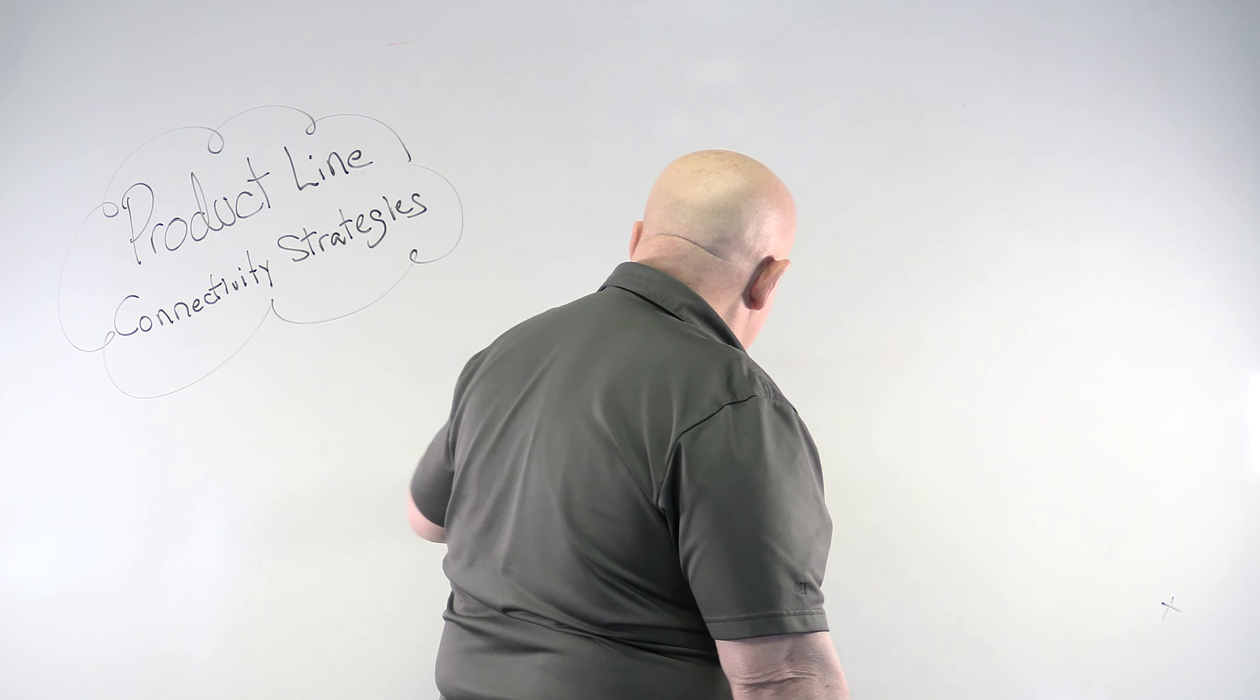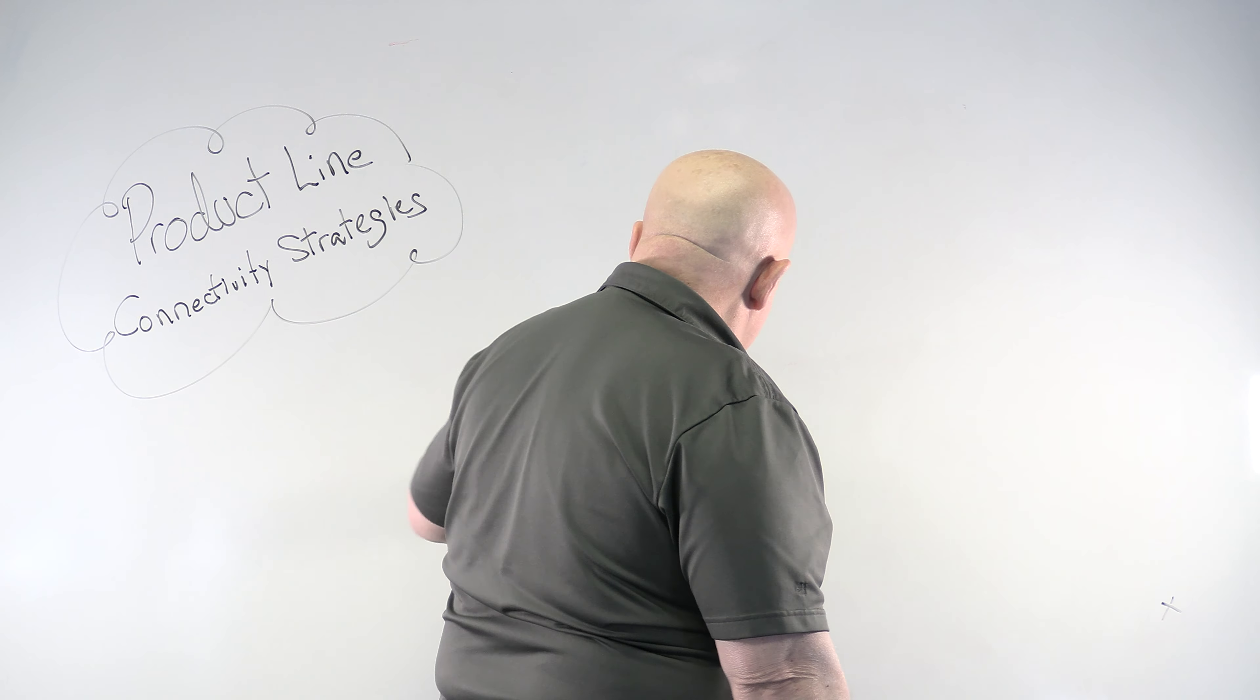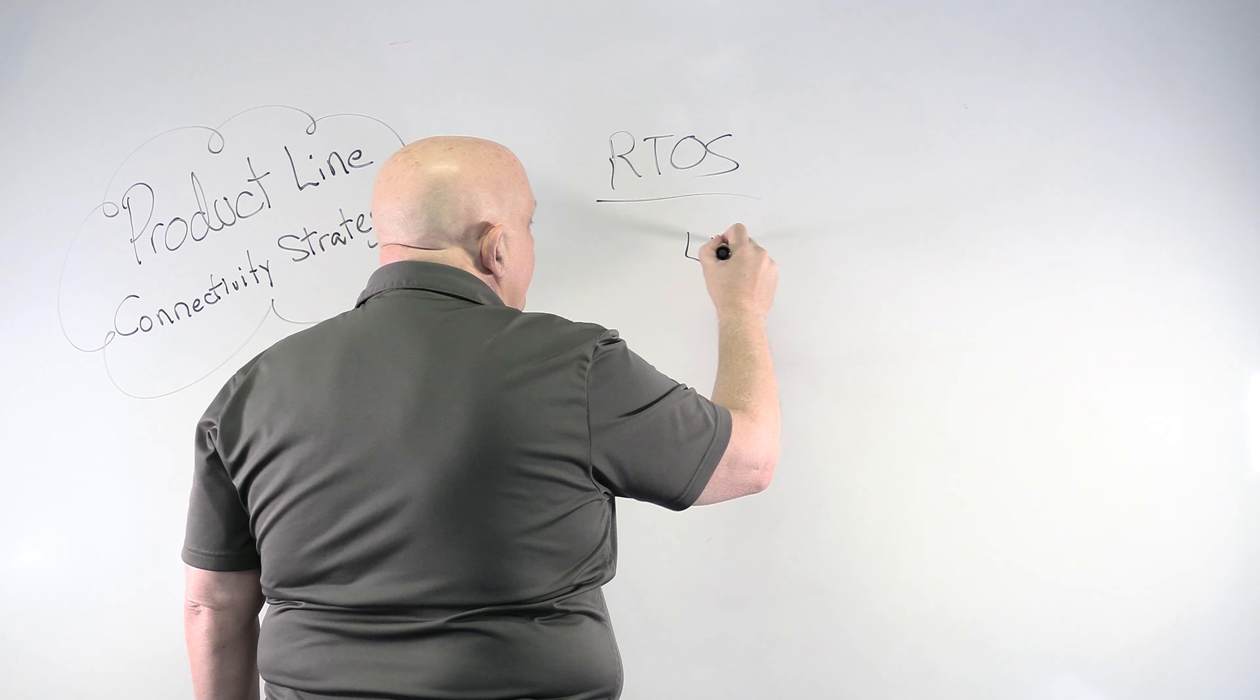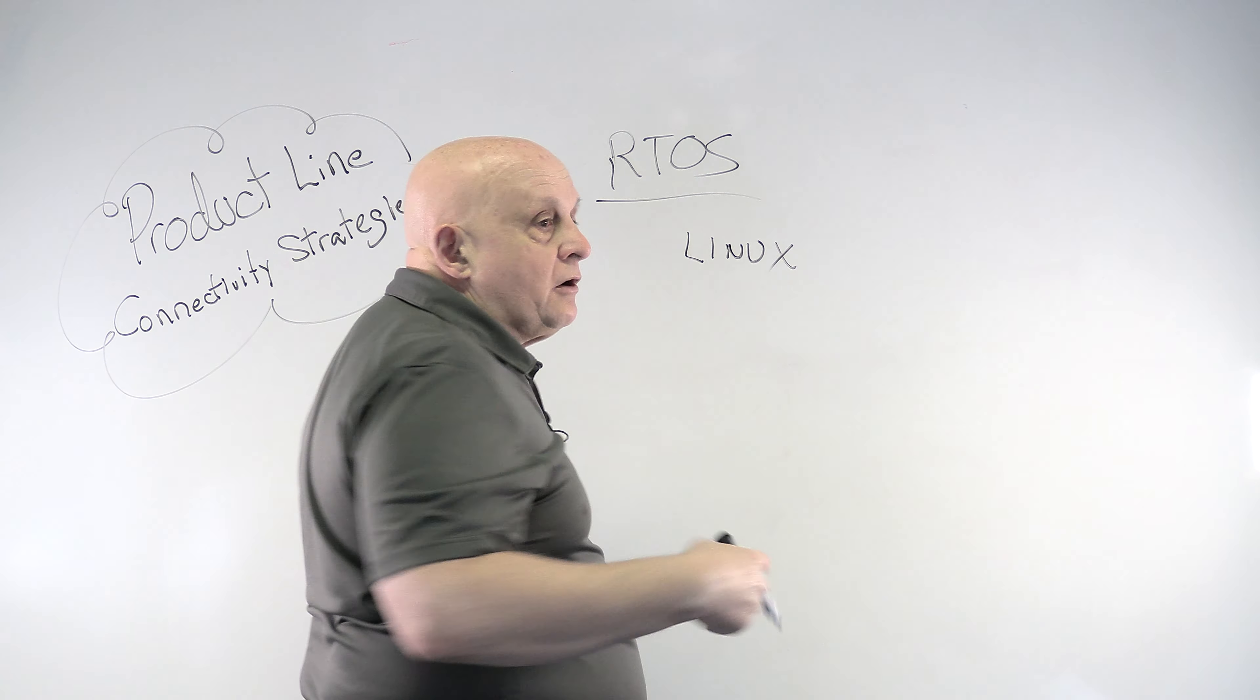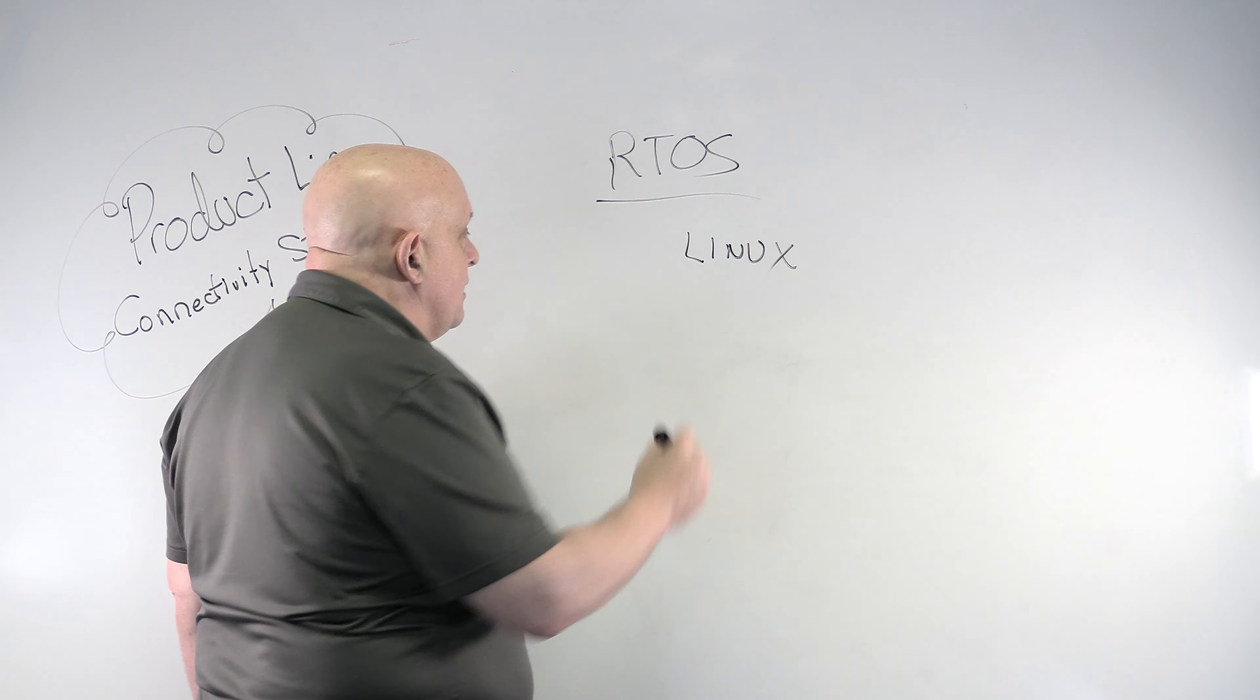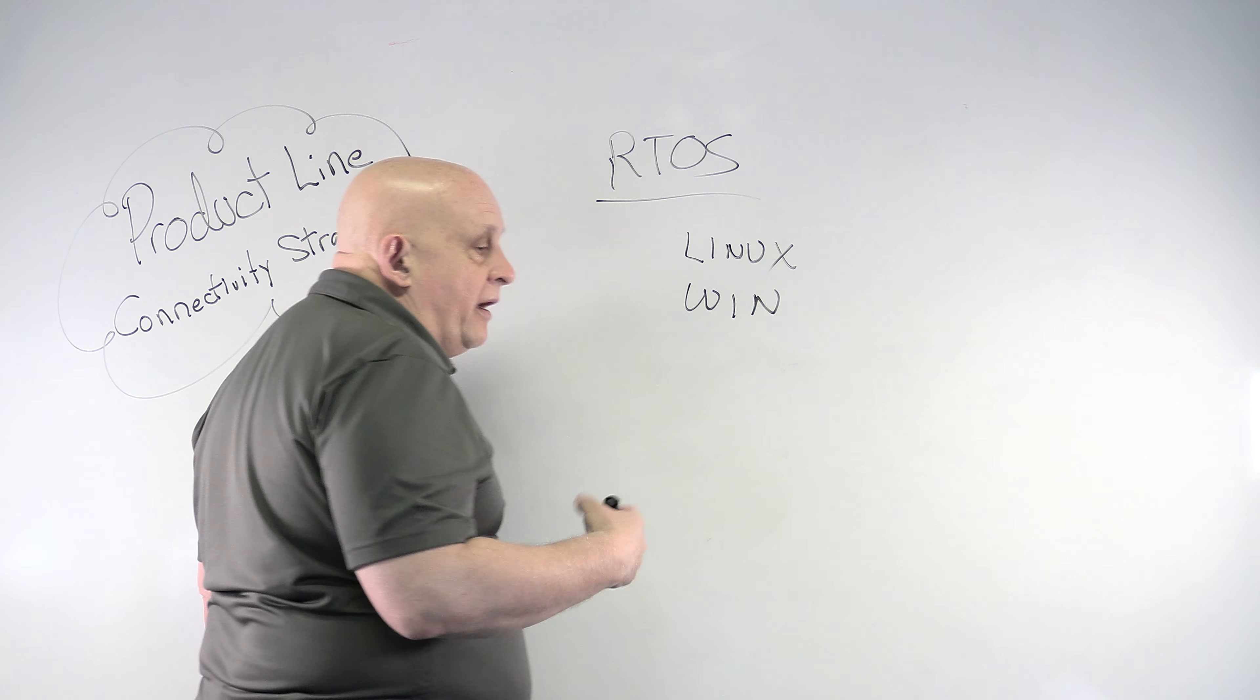All right, so what else do we need to talk about? Well, what about, you have to think about operating systems. Generally, in order to, so if you're going to be a control system, part of this, you have to figure out if you're a part of the manufacturing floor, what kind of RTOS you have? Well, Linux is very popular. It started about seven, eight years ago. We started to see lots more people doing Linux.